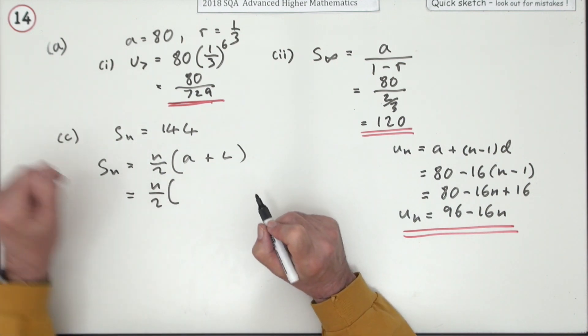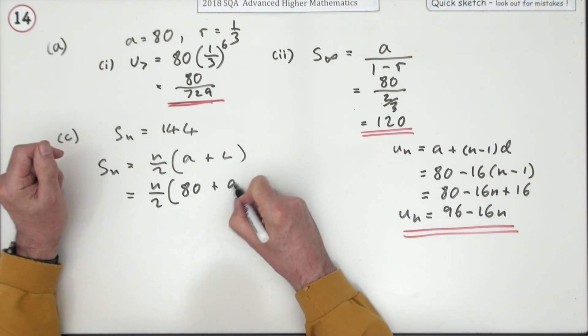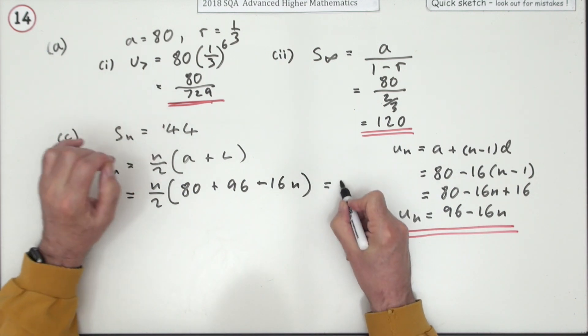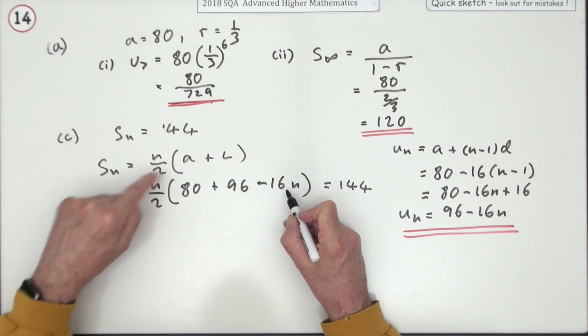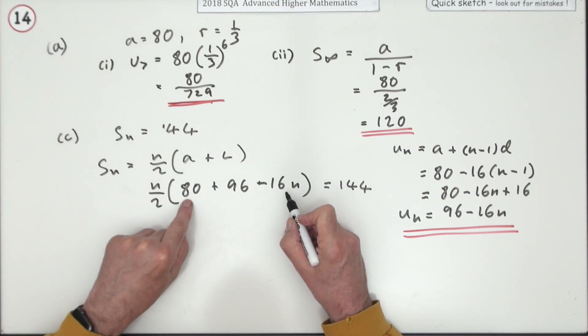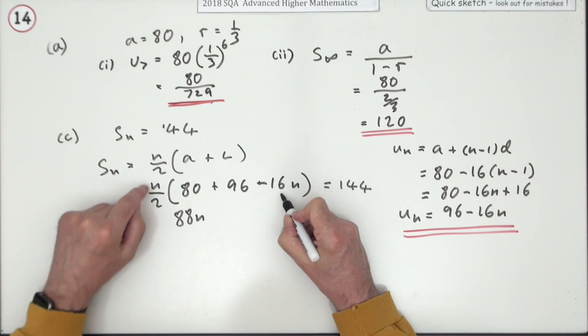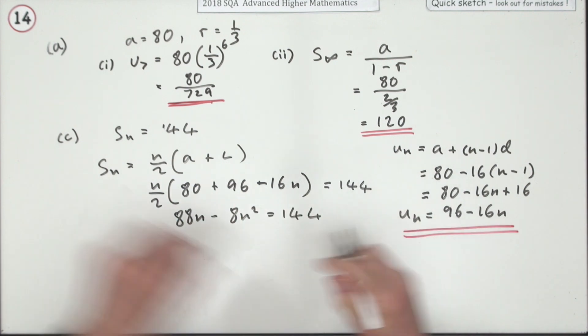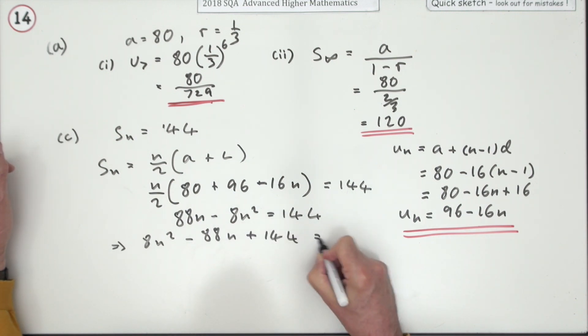Don't know if we'll save an awful lot of time, because it's not that complicated a conversion. Well, the first term is 80. The last term was given by this. 96 minus 16n. And that should come to 144. Well, divide everything inside by 2, and then multiply by n. 40 and 48 is 88. So, I've got 88n. That's down to 8. Minus 8n squared equals 144. Pop it all over to this side. 8n squared minus 88n plus 144 equals 0.